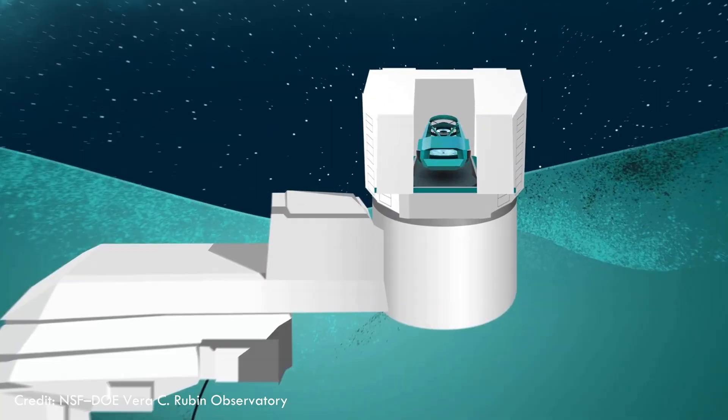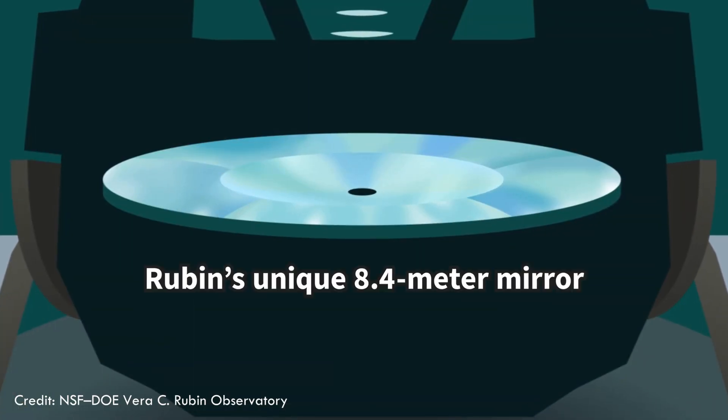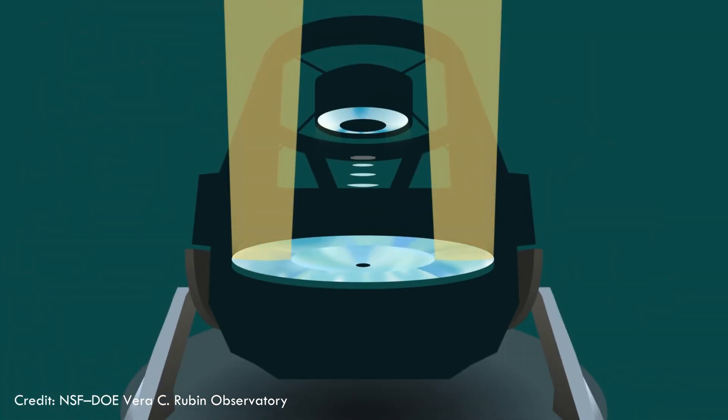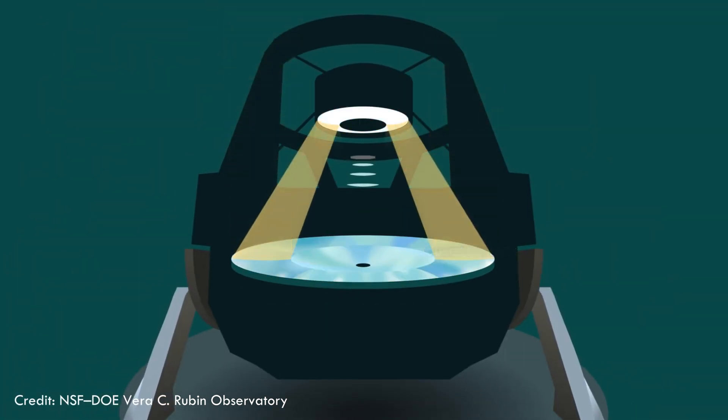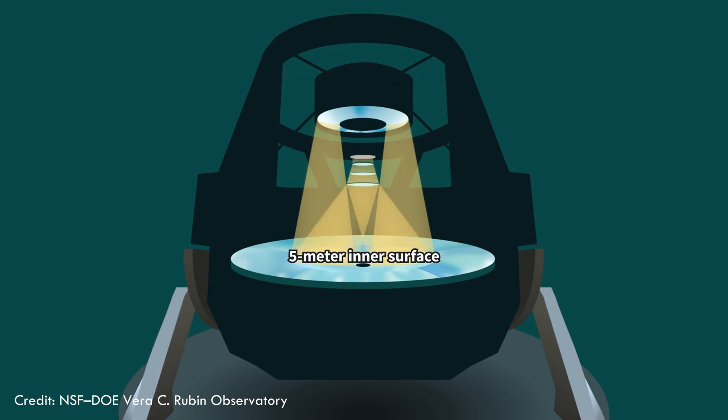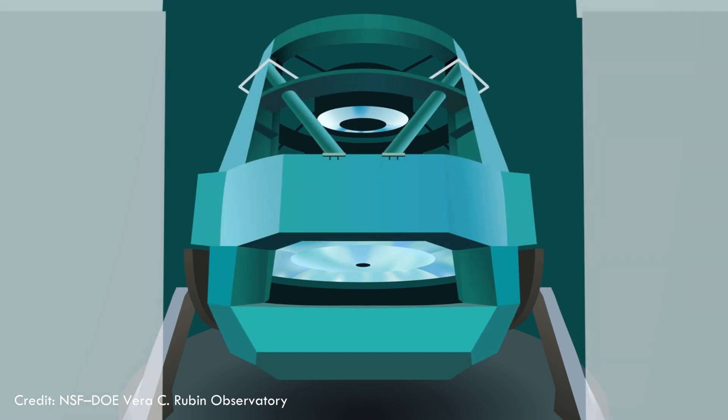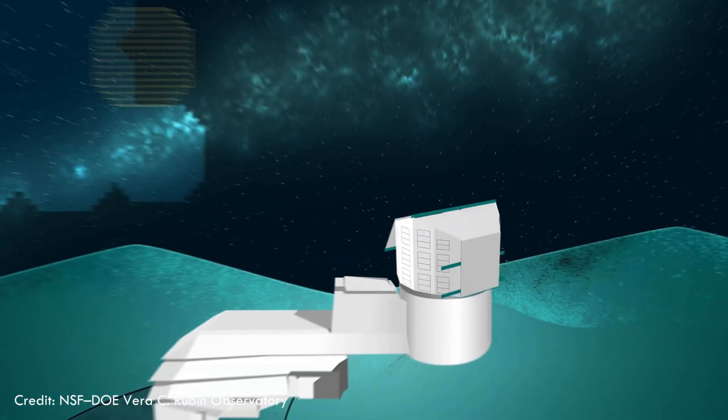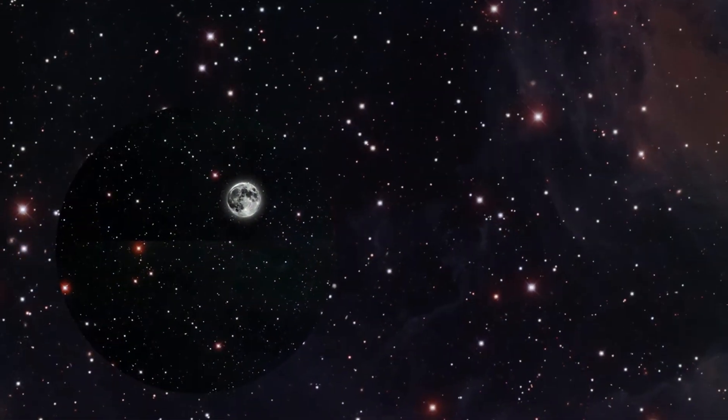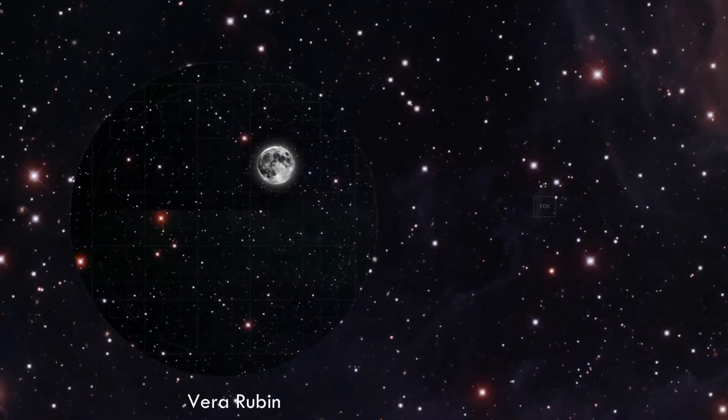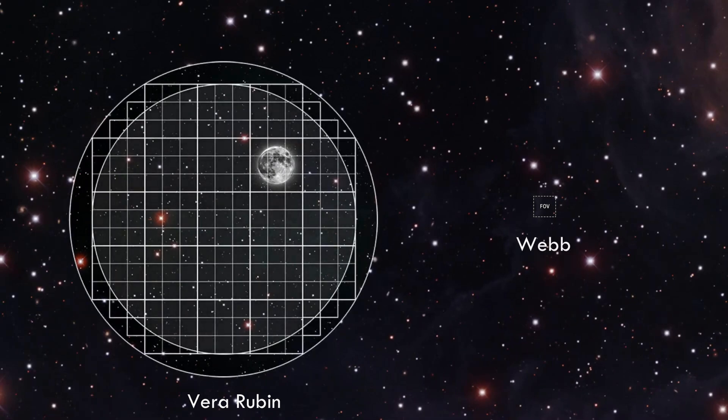Rubin's single 8.4-meter mirror uses a three-mirror design to deliver a wide 9.6 square degree field of view, which means it can image a huge swathe of the sky in a single 15-second exposure, enabling full sky surveys every few nights. In other words, Rubin sees about 7,400 times more sky area in one shot than Webb, trading breadth for Webb's unmatched depth and infrared sensitivity.